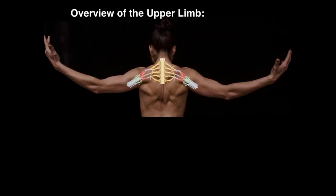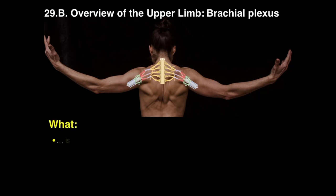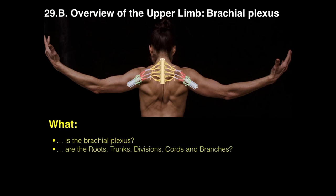Hi friends, today in this lecture we are going to do an overview of the upper limb and talk about the brachial plexus. I am going to answer questions like: what is the brachial plexus, and what are the roots, trunks, divisions, cords, and branches?